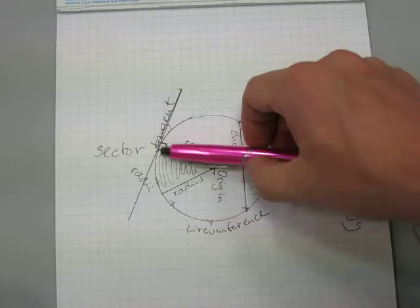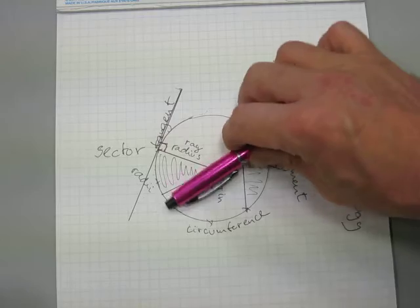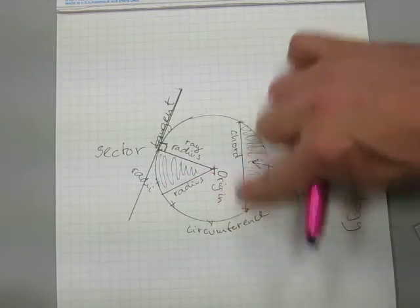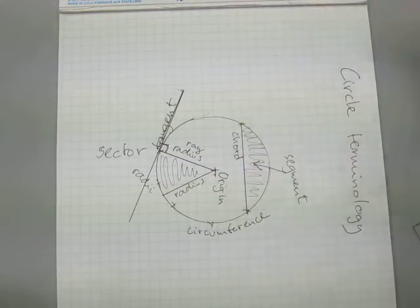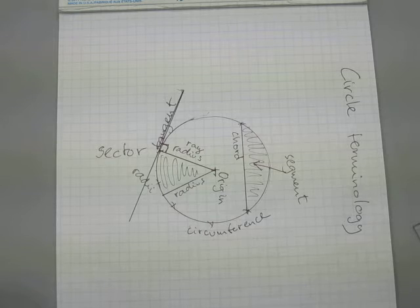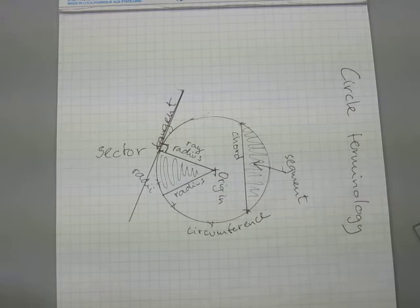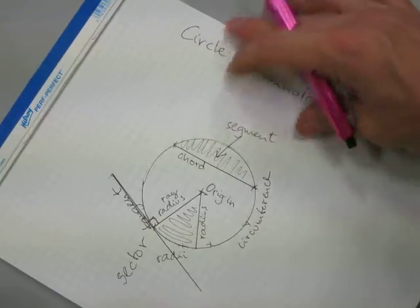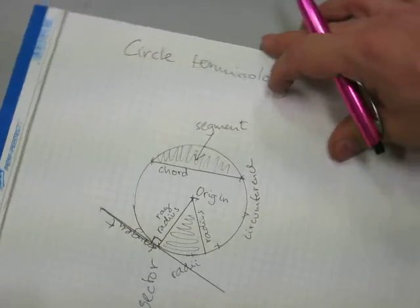Because there is an infinite amount of radii possible in the circle — just anywhere, just like spokes on a wheel — there is consequently also an infinite amount of tangent lines possible. You can draw one anywhere.